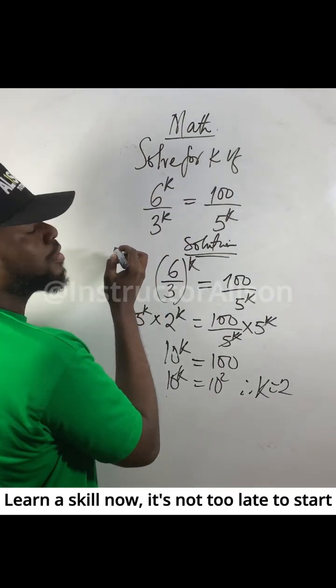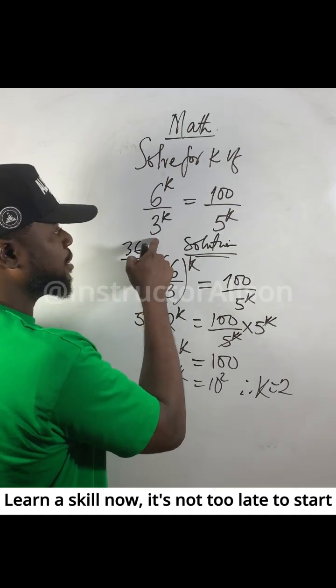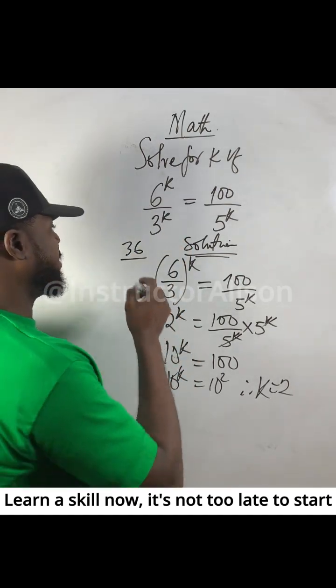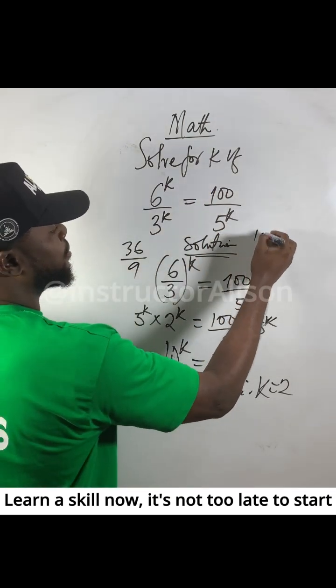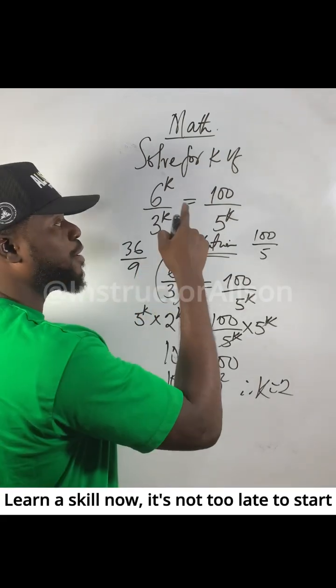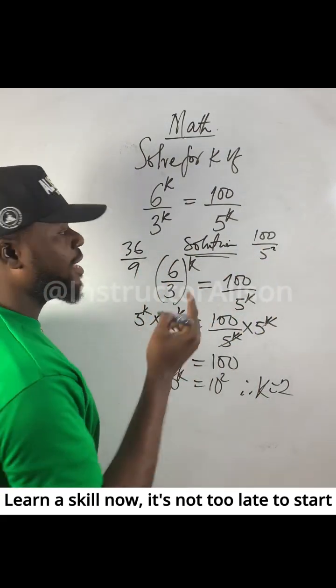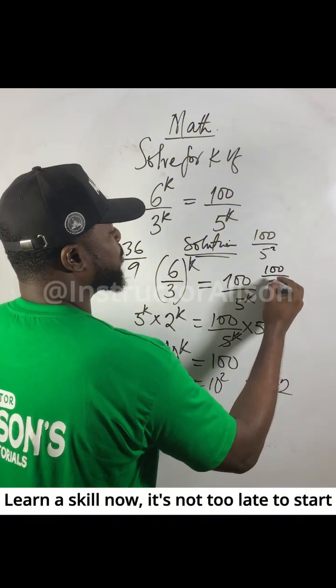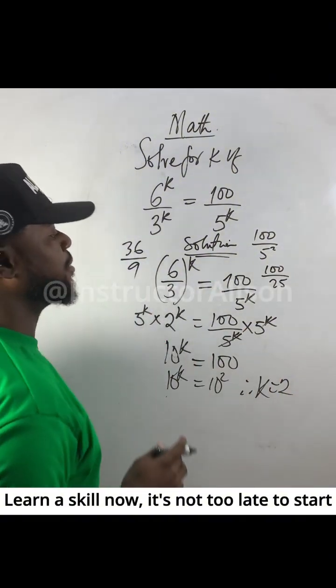Six squared gives 36 over 3 squared, which is 9. On the other side, 100 over 5 squared, which is 25. So we get 100 over 25 for this side and 36 over 9 for that side.